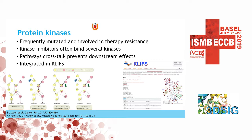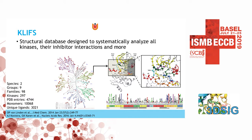In order to analyze all the kinase structural data, we developed the CLIPS database — a structural database designed to systematically analyze all protein kinases, their inhibitors, inhibitor interactions, and more. The database currently covers almost 300 kinases with structures, out of roughly 555 total. We cover two species and almost 5,000 structures. The database is fully automated, it's online, freely available, and always up to date. The PDB releases new structures on Wednesdays, so if you go to the database the next day, you'll probably already see the newest structures.